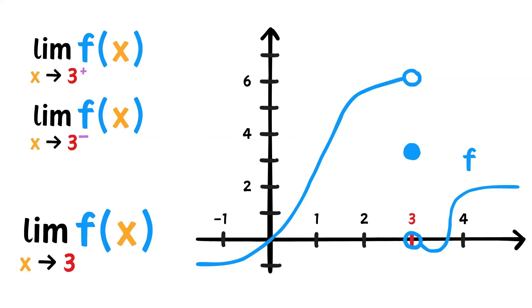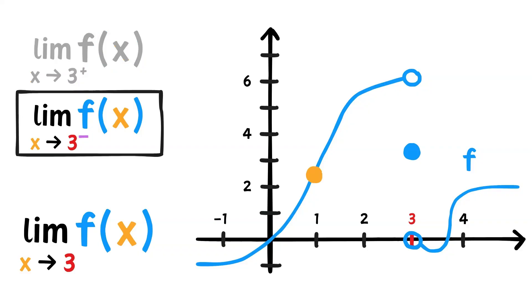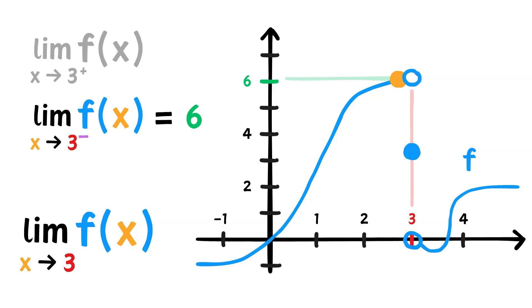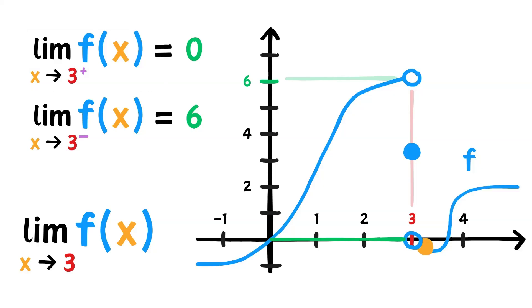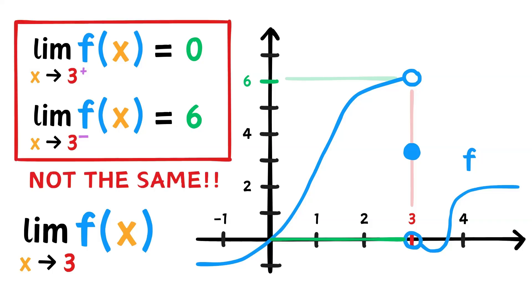Let's see what this means. Does the limit of f of x as x approaches 3 exist? Well, let's first take the limit from the left. As x approaches 3 from the left, the function seems to approach 6. So that's the one-sided limit from the left. On the other hand, taking the limit from the right, the function seems to approach 0. So both one-sided limits exist, but are not the same. Therefore, the overall limit of f of x as x approaches 3 cannot exist.